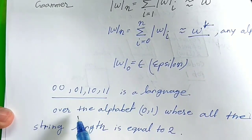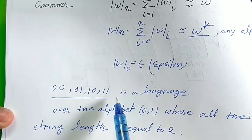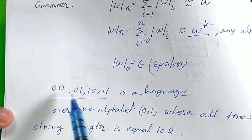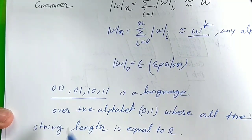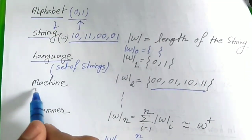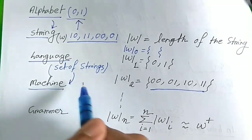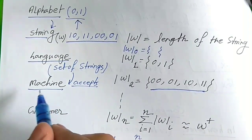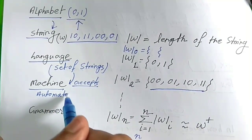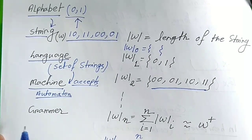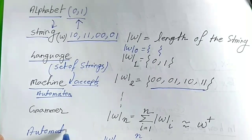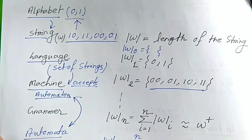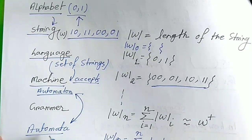So this is a language over the alphabet {0, 1}. By using this alphabet we can generate the language where all strings have length 2: {00, 01, 10, 11}. These are some basic steps for generating a language. Now, what is a machine? A machine accepts a language. This machine is called an automaton. Automaton is the singular term and automata is the plural form. If you are talking about a single machine, it is automaton; if talking about many machines together, it is automata.